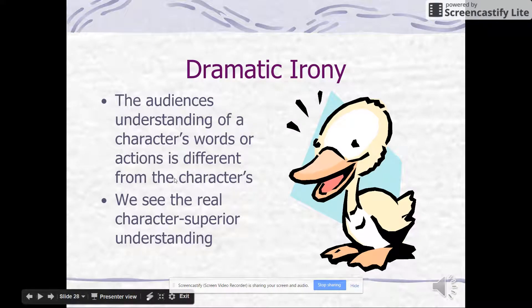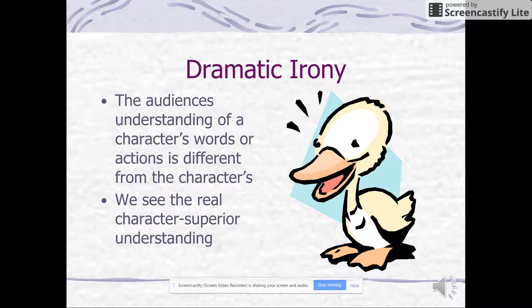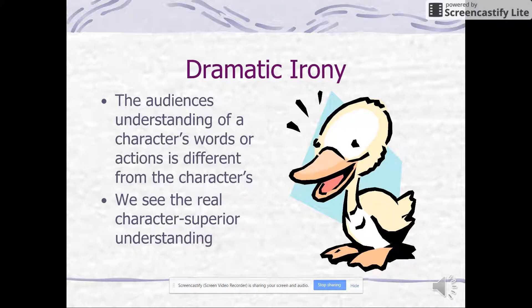Dramatic irony is especially relevant here — we didn't really find as much of it in poetry. We had situational irony and verbal irony. Dramatic irony is when the audience knows something that the characters in the play don't. We know from the first page that they're going to die. They don't. So that would be dramatic irony.